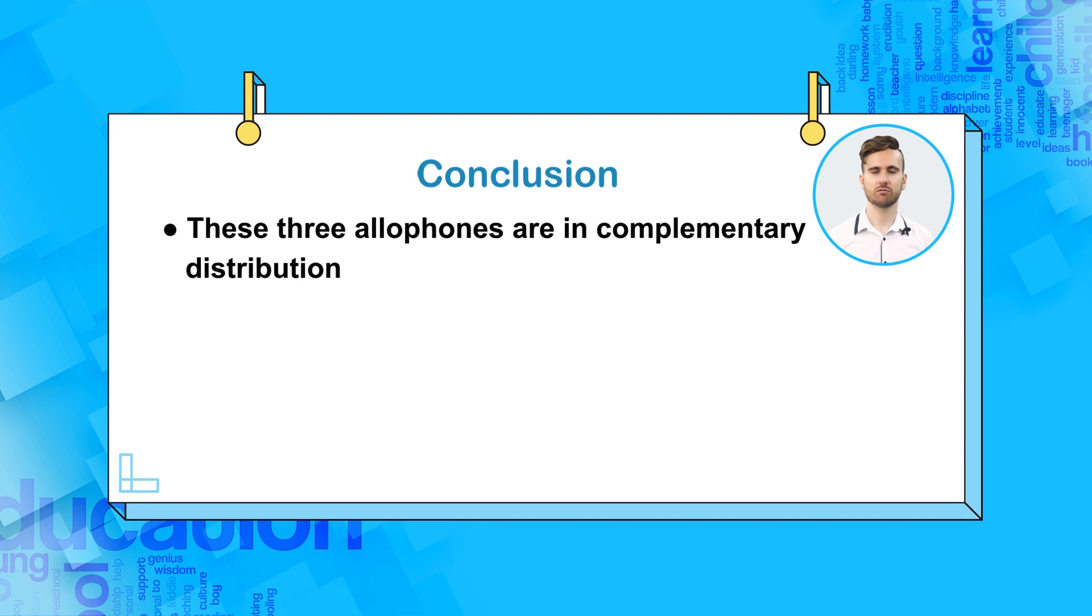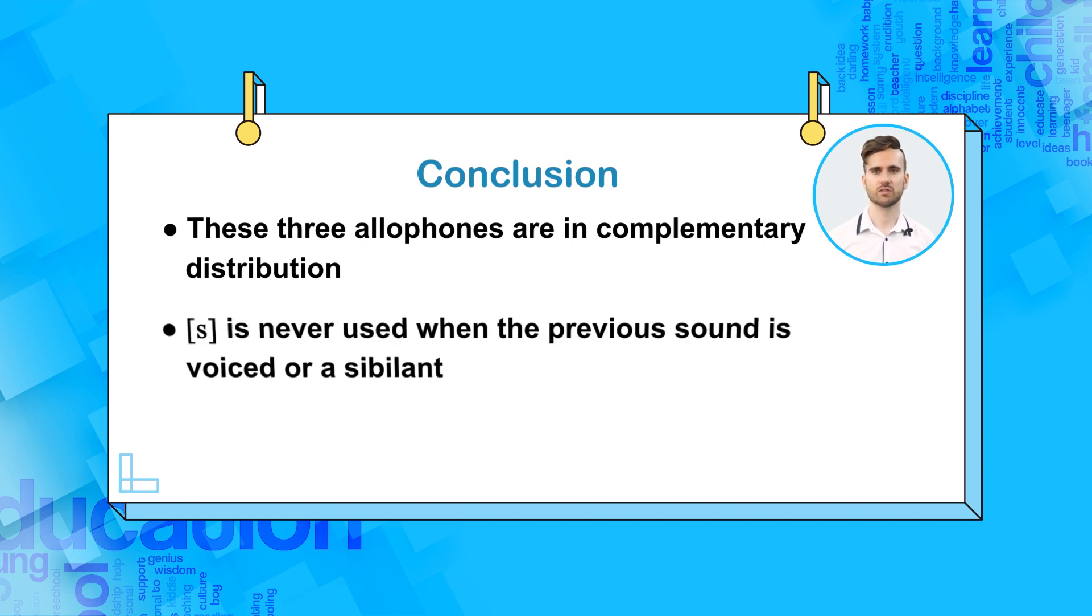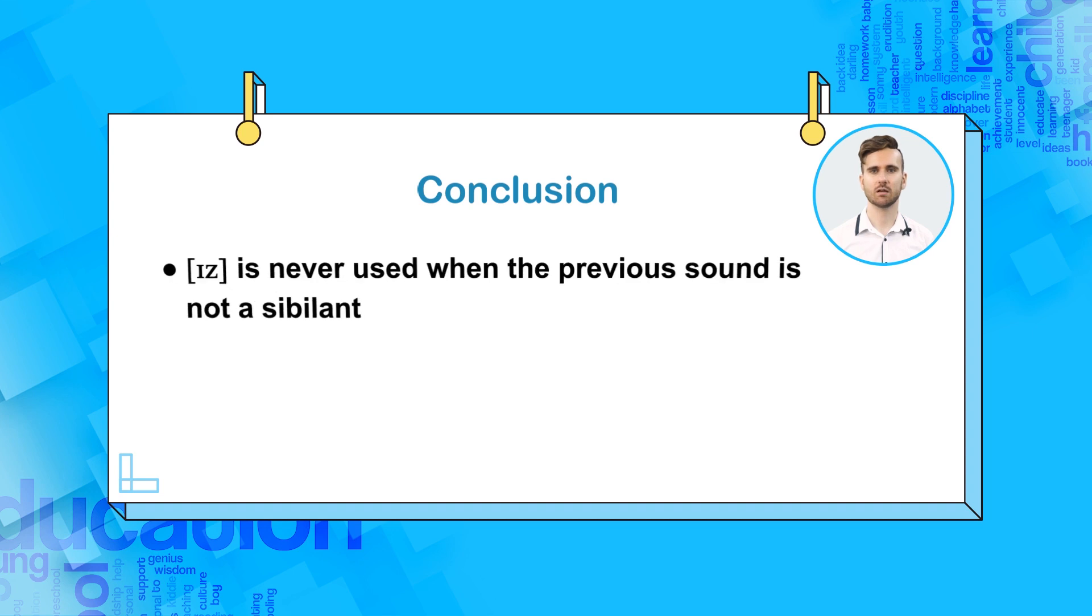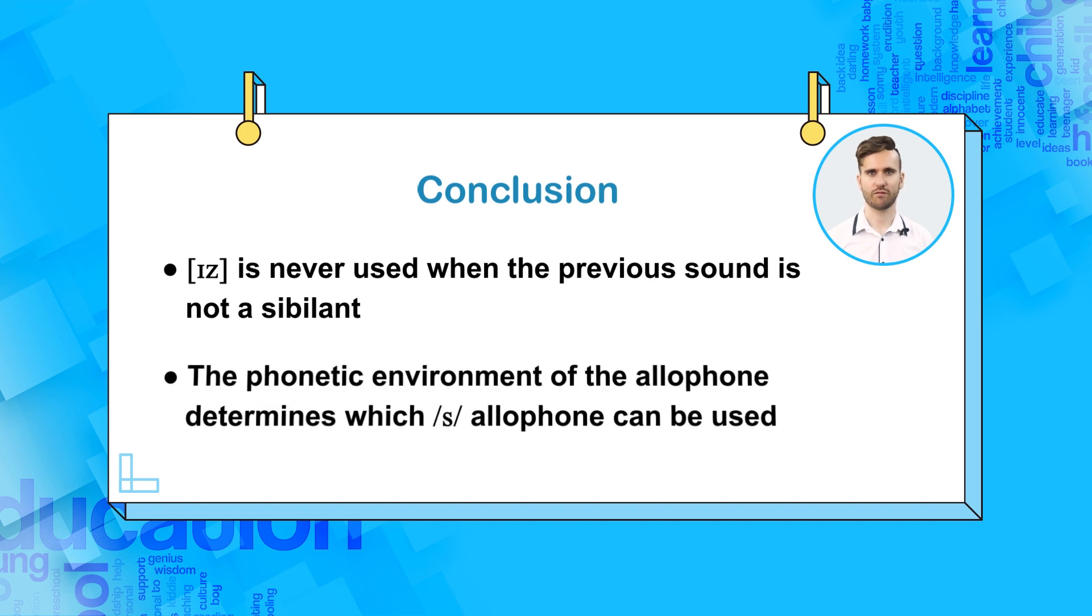We can conclude that these three allophones are in complementary distribution because they can never be in each other's phonetic environment. Therefore, the phonetic environment of the allophone limits or controls which s allophone can be used.